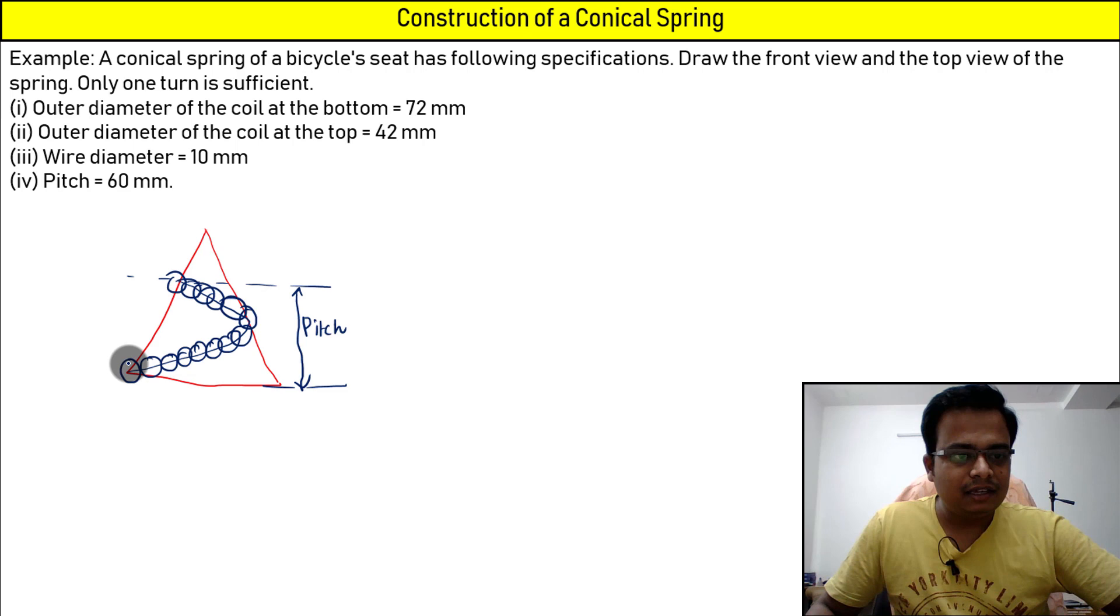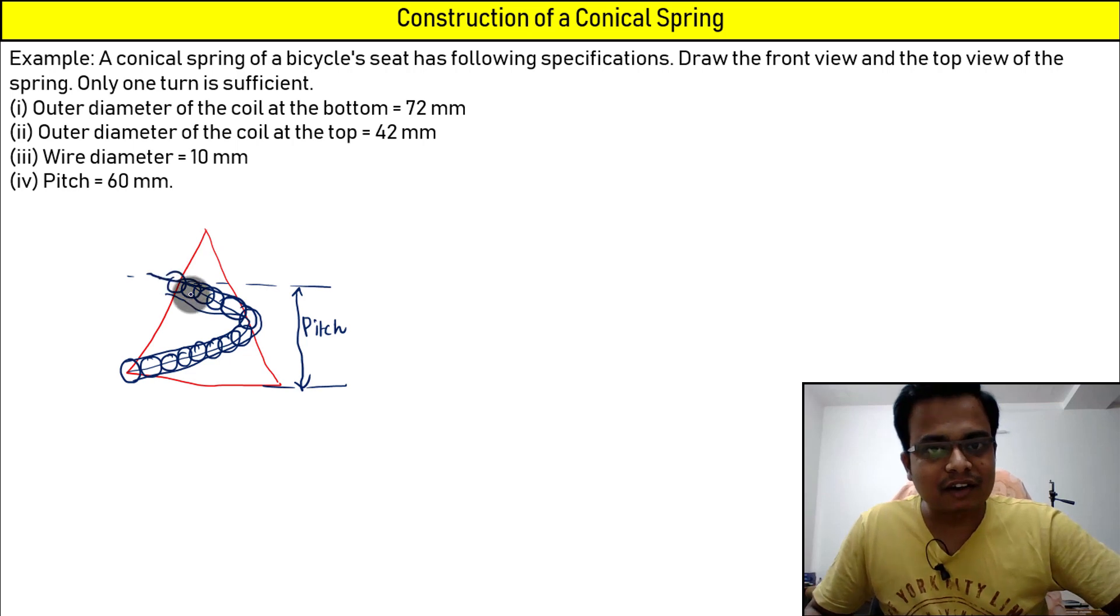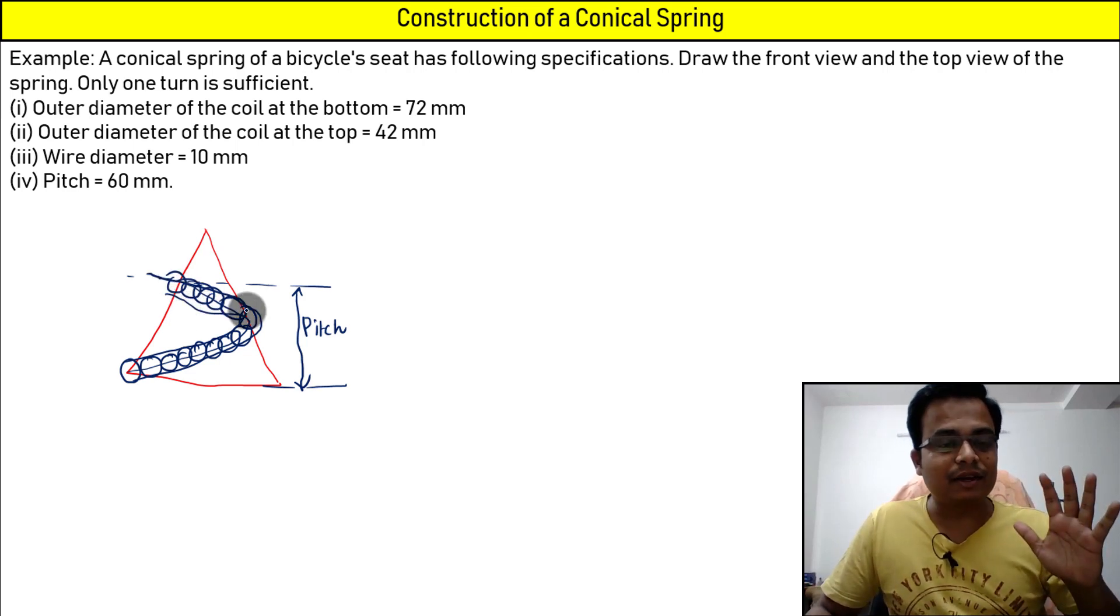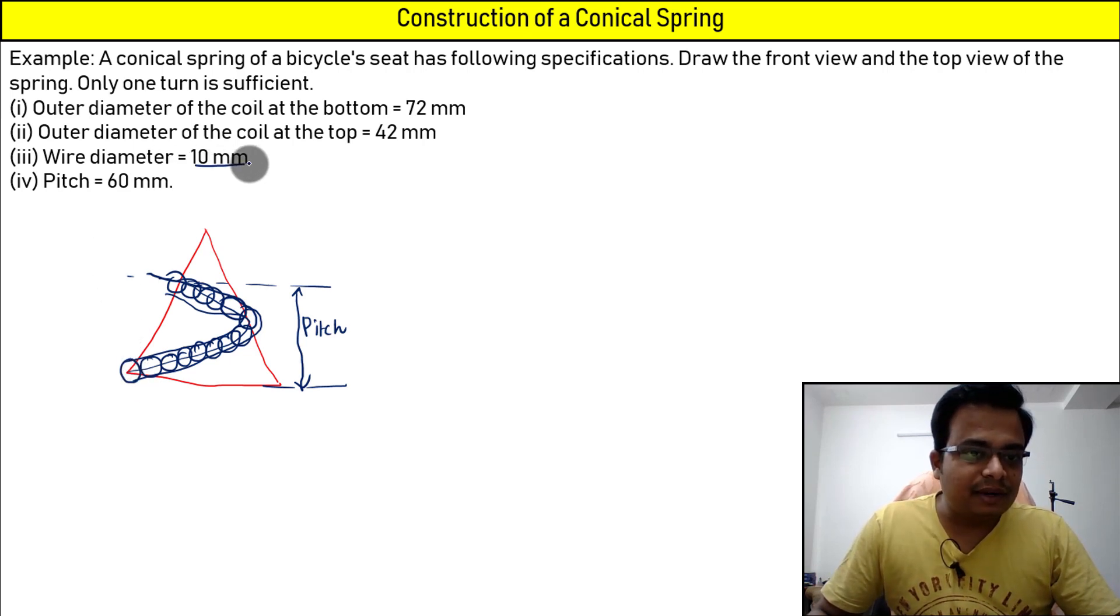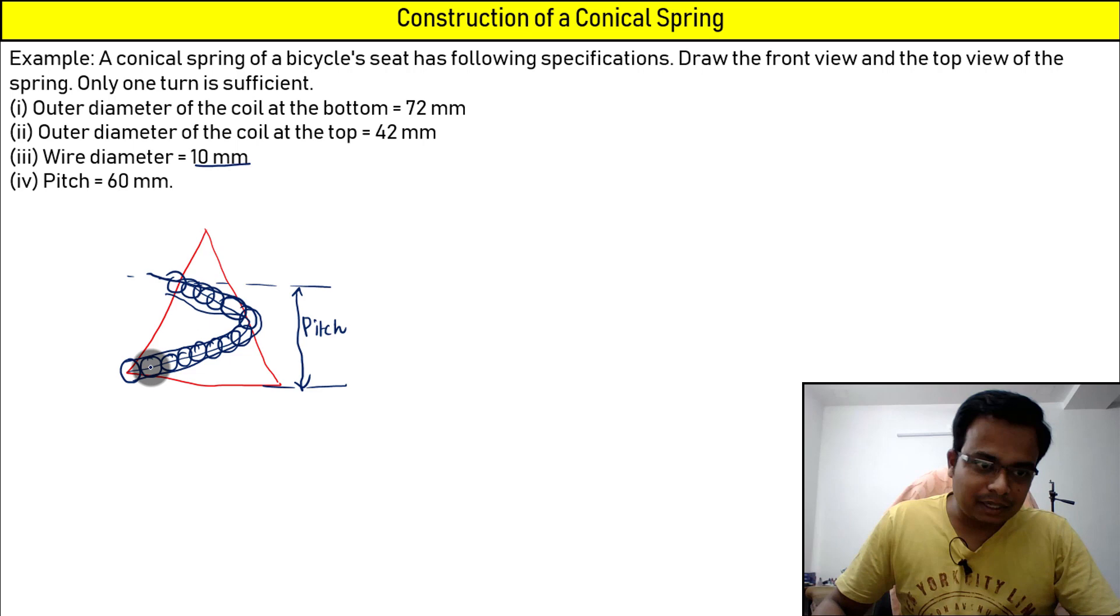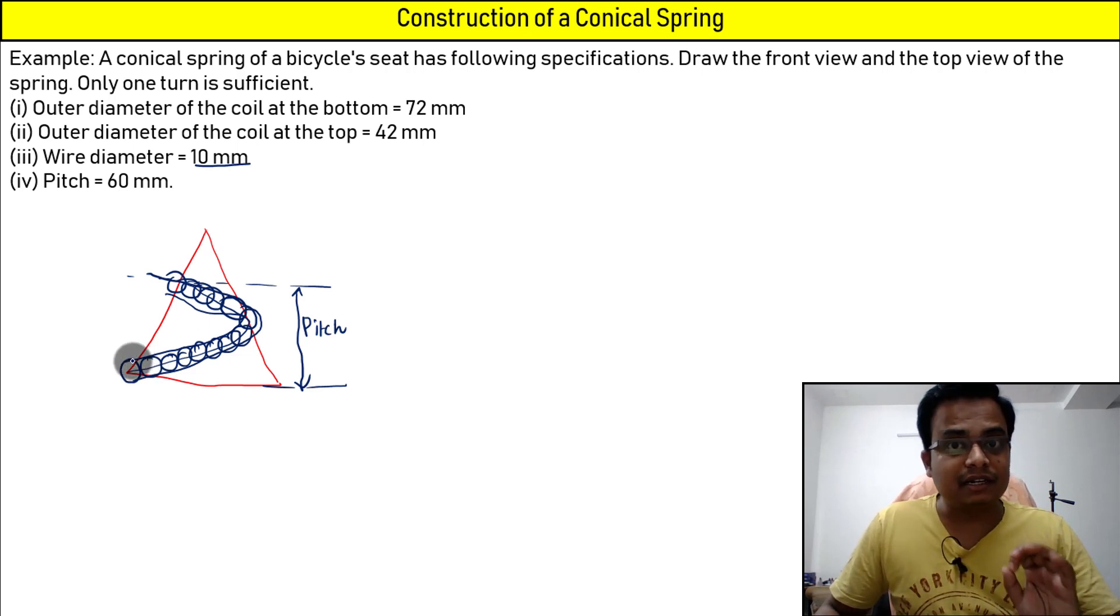And finally this is the path, and this is exactly what we will be making. But this is more in a rough sense. I'll give you the exact figure with perfect dimensions, don't worry. Now this circle over here is having a diameter of 10 millimeters. This circle is the wire diameter, that is 10 millimeters.